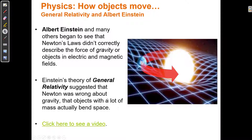So Albert Einstein and many others began to see that Newton's laws didn't correctly describe the force of gravity or objects in electric and magnetic fields. So Einstein furthered Newton's laws of motion when he suggested the theory of general relativity.